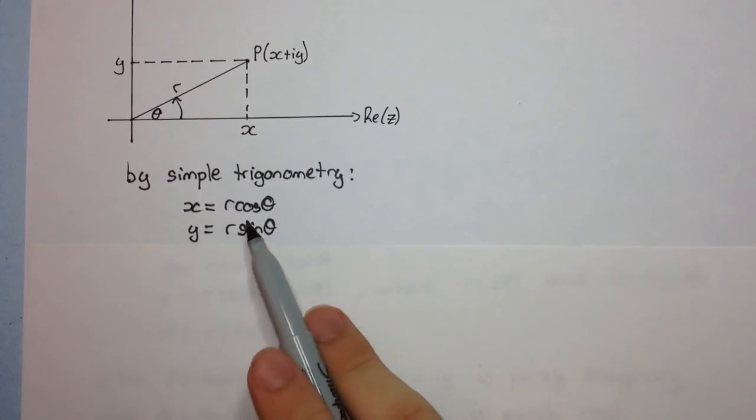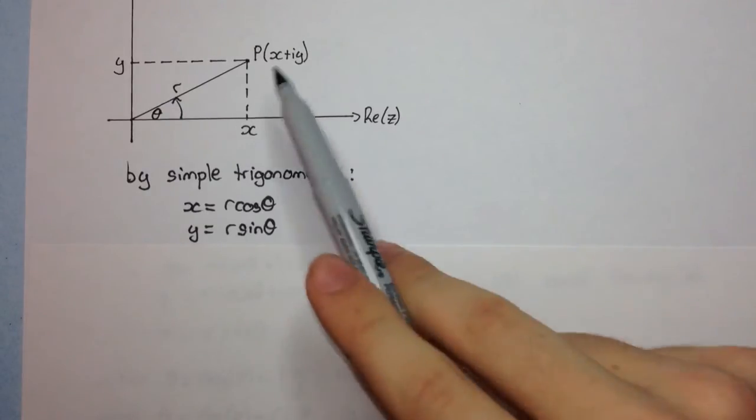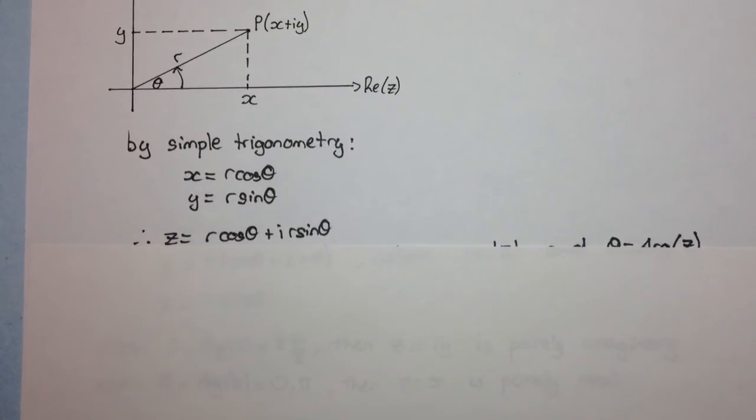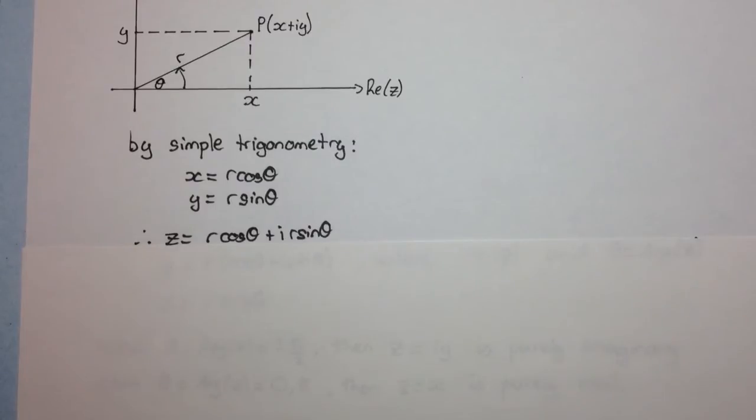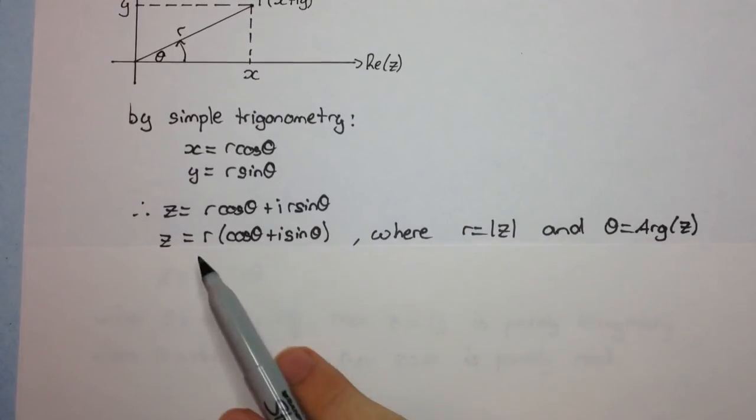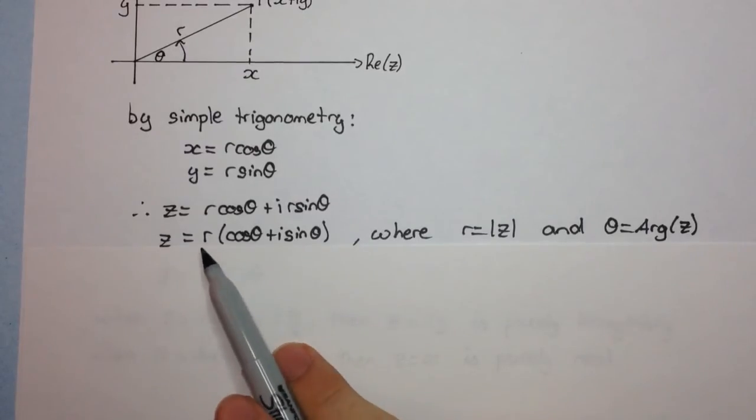Okay, so if x is r cos theta and y is r sine theta, and we know that the complex number is x plus iy, then we can have z as r cos theta plus i r sine theta. And this is known as modulus argument form. Now, we can factor out the r, and we get r into cos theta plus i sine theta. So r here is the modulus of the vector, or the modulus of the complex number.